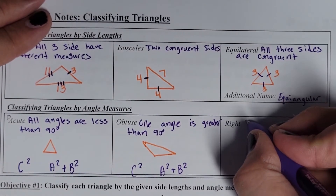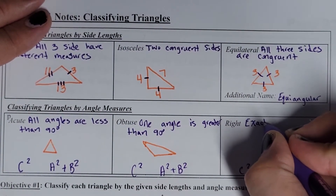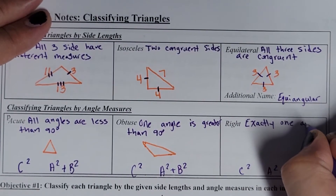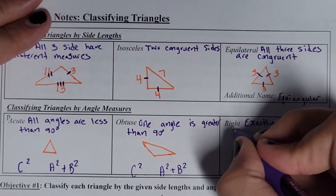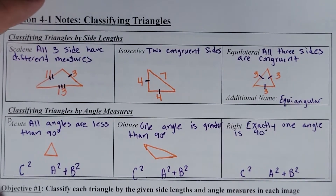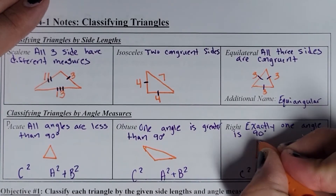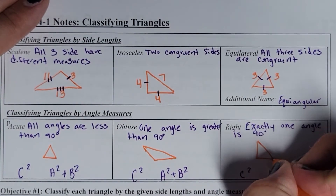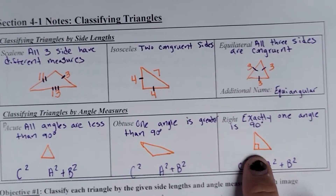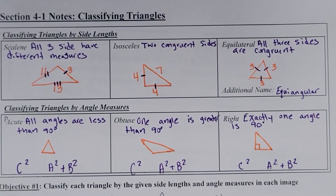A right triangle is when exactly one angle is 90 degrees — not less than, not greater than, but exactly 90 degrees. A right triangle is going to look something like that. I'm going to put a little box here — that's how we know it means a right angle. You should always look for that little box to be there.